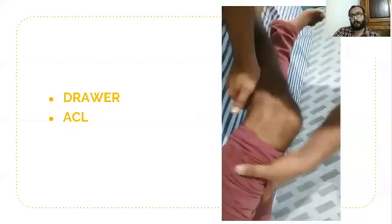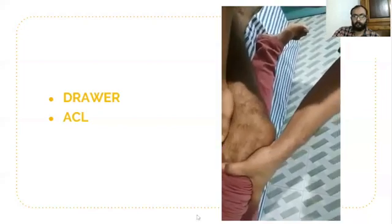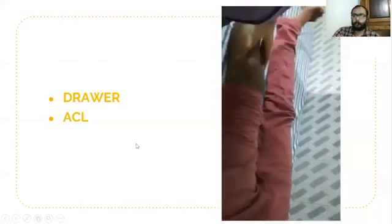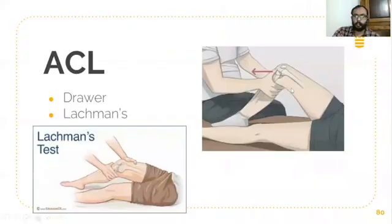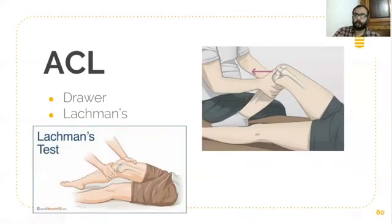In Lachman's test on the same patient, pulling the tibia anteriorly shows anterior translation clearly. Regarding the specificity of each test: theoretically, the drawer's test checks the anterior fibers of the ACL while Lachman's test checks the posterior fibers of the ACL. The key practical difference is that the drawer's test is done at 90 degrees of knee flexion and Lachman's test at 20 to 30 degrees, but both use the same method for clinical examination of anterior cruciate ligament tear. Lachman's test is more confirmatory overall.